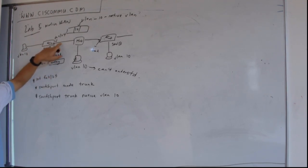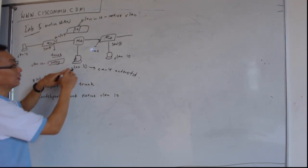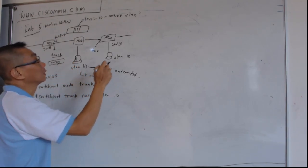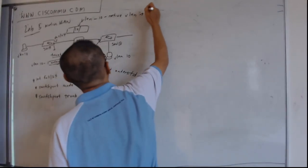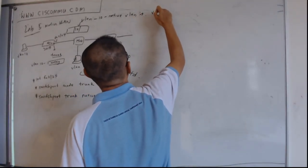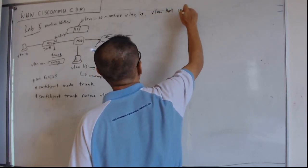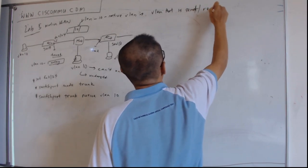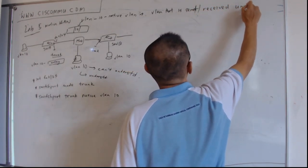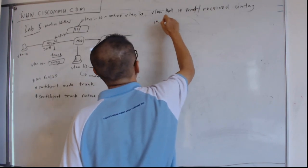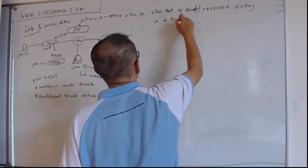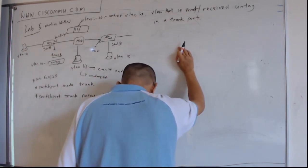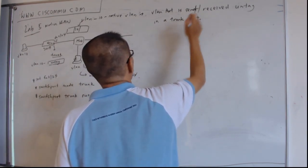Whenever there's a VLAN tag to be sent out at this trunk port, it will be sent untagged. So once it's sent untagged, this PC will be able to understand. The VLAN tag will be sent untagged and received in the trunk port.